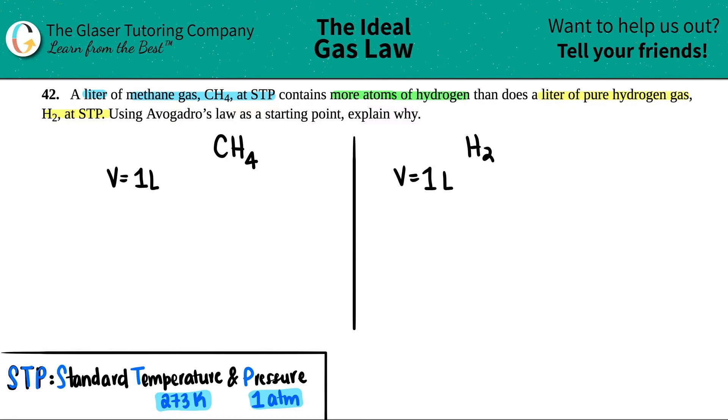And they're both at STP, so I know the pressures and the temps for both of them, so that doesn't change. So this is one atm. This is one atm. The temps are the same, because they're both at STP. 273 Kelvin, 273 Kelvin.